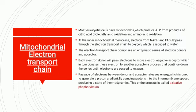Most eukaryotic cells have mitochondria, which produce ATP from products of the citric acid cycle, fatty acid oxidation, and amino acid oxidation. At the inner membrane of mitochondria, electrons from NADH and FADH2 pass through the electron transfer chain to oxygen, which is then reduced to water.